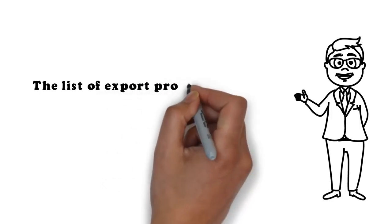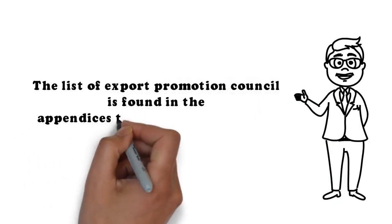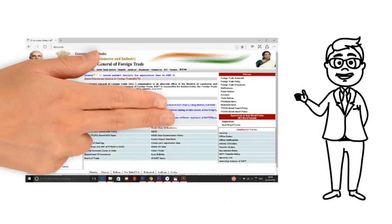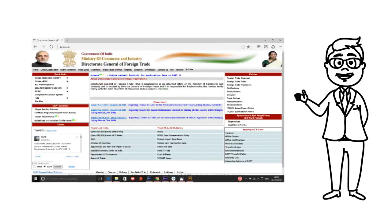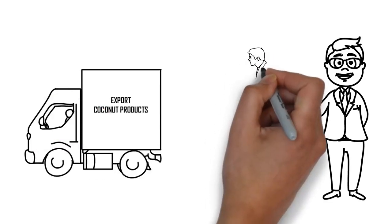The list of Export Promotion Councils is found in the appendices to the Foreign Trade Policy, which is available on the DGFT website under Acts and Rules. Since Nikku wants to export coconut products,